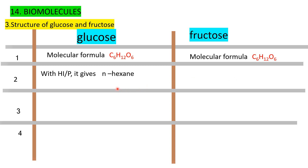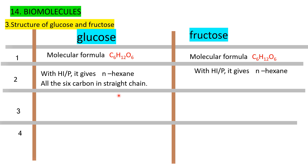With hydrogen iodide and phosphorus, both glucose and fructose give n-hexane. All 6 carbons are in a straight chain — this confirms all 6 carbons form a straight chain in both molecules.